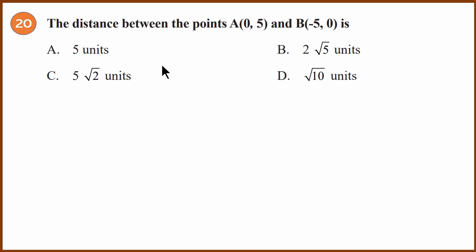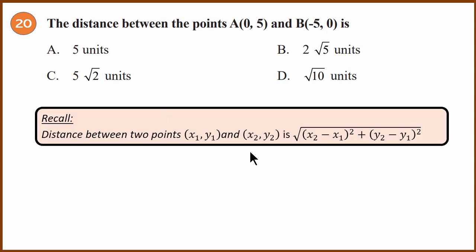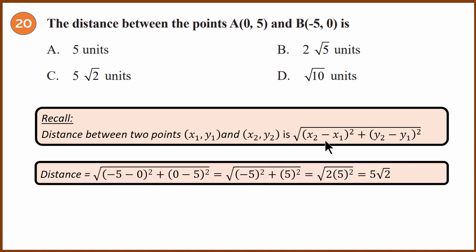Twentieth question: distance formula. Find the distance between points (0, 5) and (−5, 0). Substituting into the distance formula: x2 − x1 = −5 − 0 = −5, so (−5)² = 25; y2 − y1 = 0 − 5 = −5, so (−5)² = 25. Total = 25 + 25 = 50. Square root of 50 = 5√2. The answer is 5√2. Compared to the first model paper, this is an easier paper. I'll solve the other 20 questions in another video.